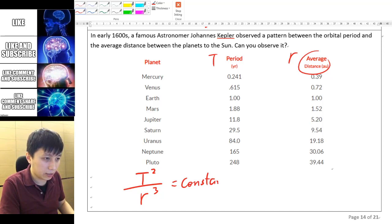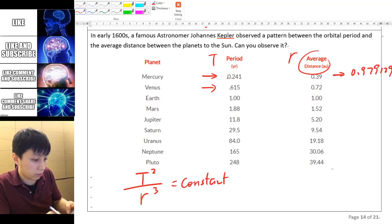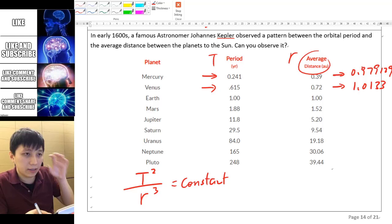So you may like to try it out if you haven't really found out the relationship. So if I try to use the first set of data that we have got, 0.241 squared divided by 0.39 to the power of 3, you get something like this. The value that you get is going to be 0.979129. We can try another one, let's say Venus. So 0.615 squared divided by 0.72 to the power of 3, this is going to be 1.0133. Well yes, you may say it's not exactly the same, but then this is going to be very very close enough.